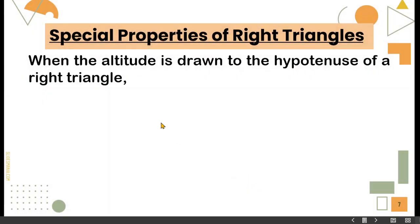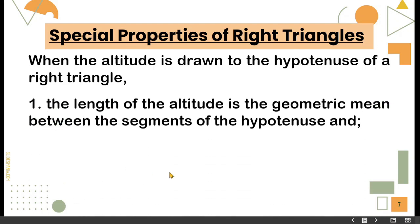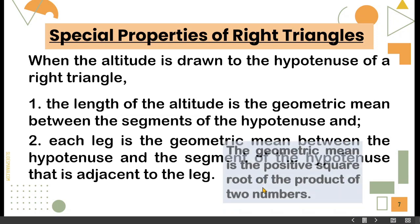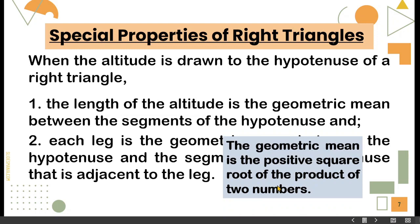We have the special properties of right triangles. When the altitude is drawn to the hypotenuse of a right triangle, the length of the altitude is the geometric mean between the segments of the hypotenuse and the segment of the hypotenuse adjacent to that length. Geometric mean is the positive square root of the product of two numbers.